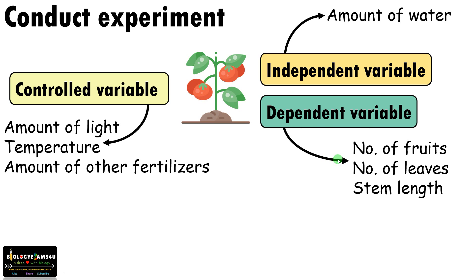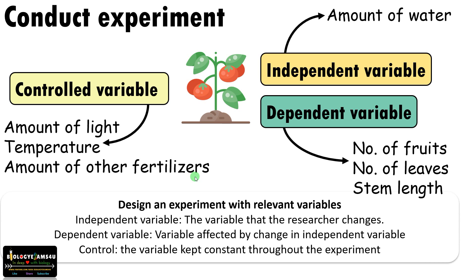There are many other variables involved in the experiment that should be controlled — kept constant throughout the experiment — like amount of light, temperature, and amount of fertilizers added to all treatments. All variables kept constant are called the controlled variable. To summarize: the independent variable is the quantity of water given to different treatments; the dependent variable is the number of fruits and leaves; and all other variables like light and temperature are the controlled variables.